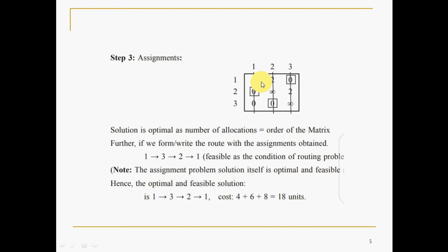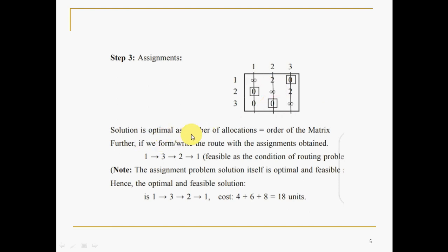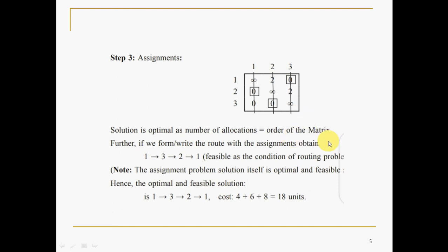Scanning row-wise: if a row has a single zero, assign it and cancel the respective column. First row — cancel the column; second row — cancel the column; third row — cancel the column. The solution is optimal because the number of allocations equals the order of the matrix. Number of allocations are 3, and the order of the matrix is also 3 (3×3), hence optimality is declared.